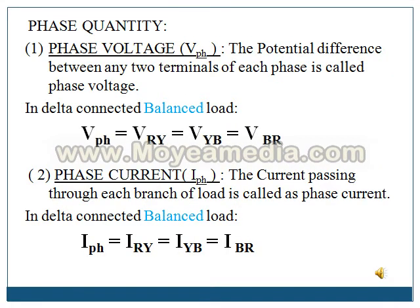Similar to line quantities, we also have phase quantity. On the phase side, you will have voltage as well as current. The three terminals on the phase side are R, Y, and B, where R of the phase is connected to R of the supply, Y to Y, and B to B. When we connect a voltmeter across one phase, the voltages are VRY, VYB, and VBR. In delta connected balanced load, V phase equals VRY, equal to VYB, equal to VBR — equal signs because this is balanced load.